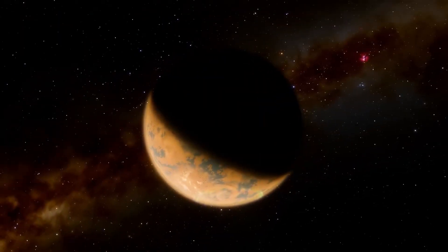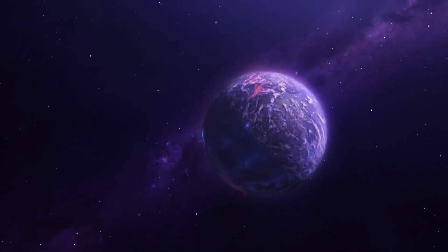Proxima B, however, is different from Earth in a number of ways. For one thing, its year is only 11 days long.